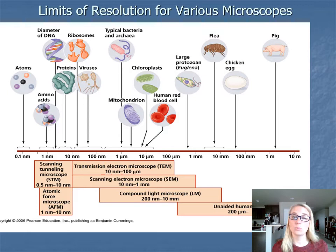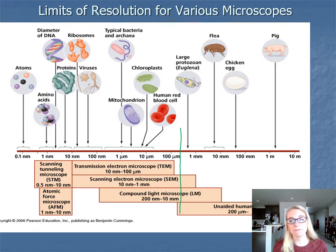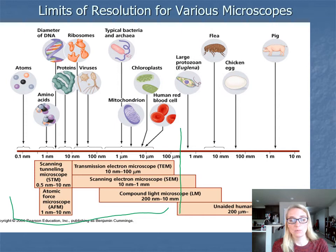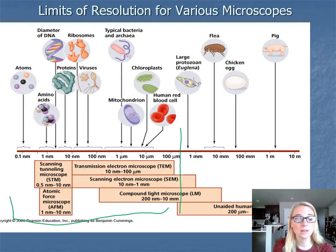This allows us to see things we wouldn't normally see with the naked eye. Before Leeuwenhoek and Hooke, we were limited to seeing things about half a millimeter in size — anything smaller we cannot discern with our eyes. For comparison, human red blood cells, chloroplasts, and mitochondria fall around 5–10 microns. Typical bacteria are around 2–5 microns. Then getting into nanometers, we can talk about viruses and large molecules like ribosomes, DNA, and proteins.